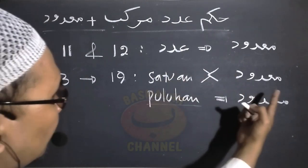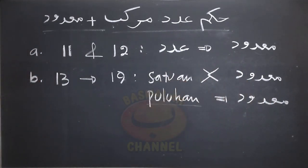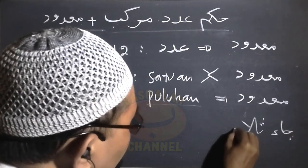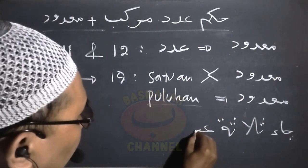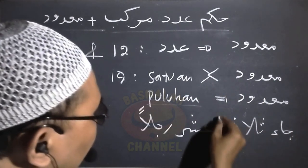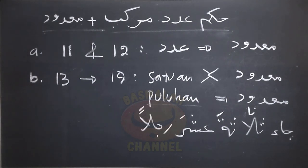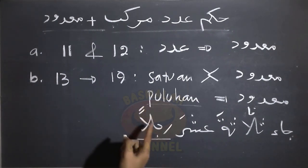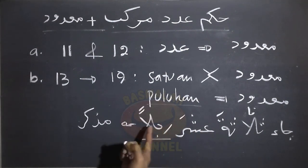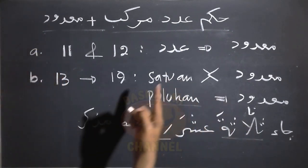Begitu juga manakala makdudnya mu'anas maka puluhannya berbentuk mu'anas dan satuannya berbentuk mudakar. Contohnya seperti lafaz: Ja'a Falafata Asyaro Rojulan — datang tiga belas orang laki-laki. Kita perhatikan makdudnya adalah lafaz Rojulan yang berbentuk mudakar. Maka bentuk puluhannya harus sama dengan makdudnya: Asyaro mudakar. Namun untuk satuannya ini berlawanan dengan makdudnya, jadi karena makdudnya mudakar maka satuannya berbentuk mu'anas: Falafata.